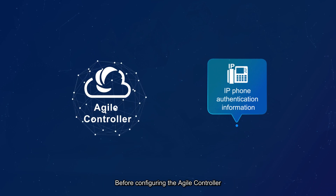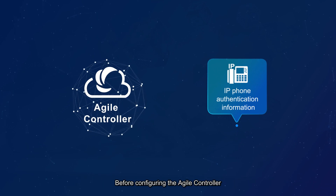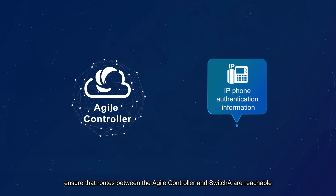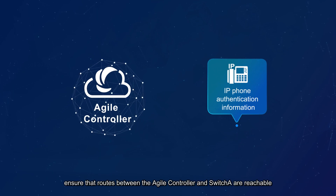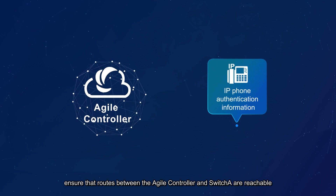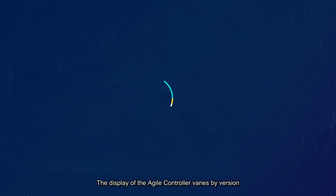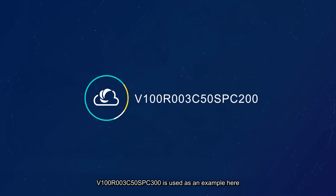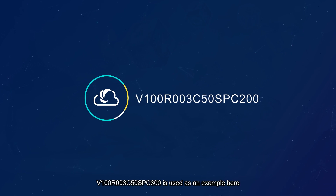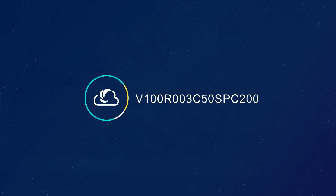Before configuring the Agile Controller, ensure that routes between the Agile Controller and switch A are reachable. The display of the Agile Controller varies by version; V100 R003C50SPC300 is used in this example.